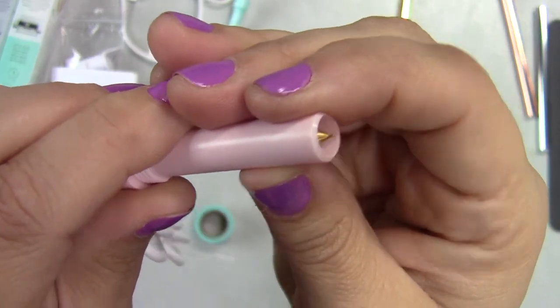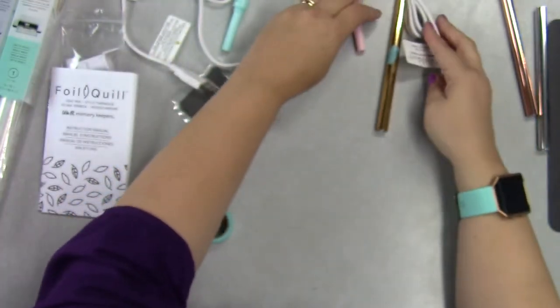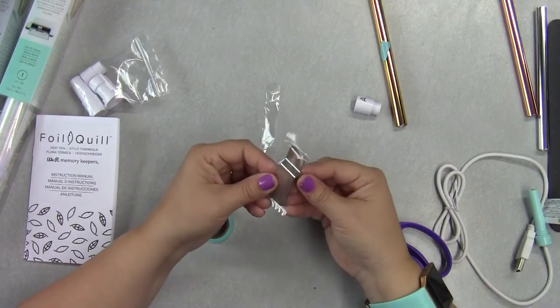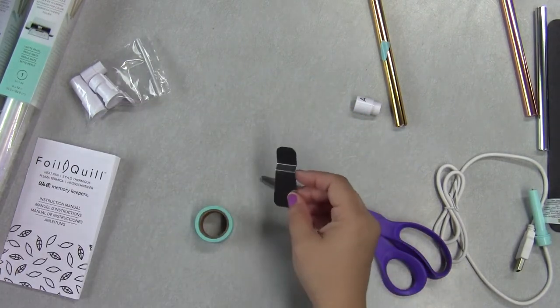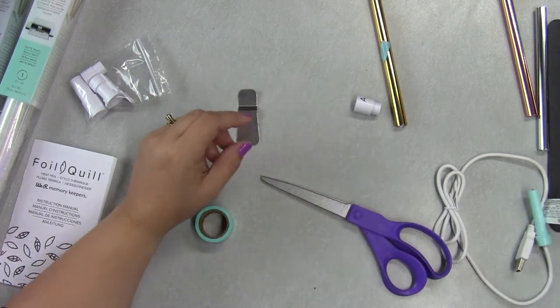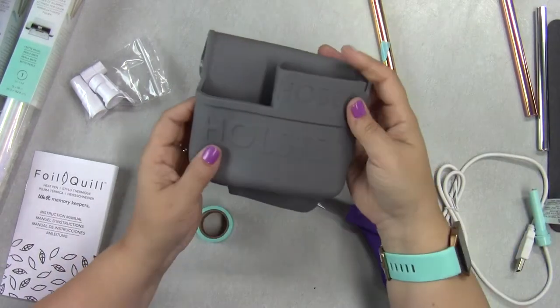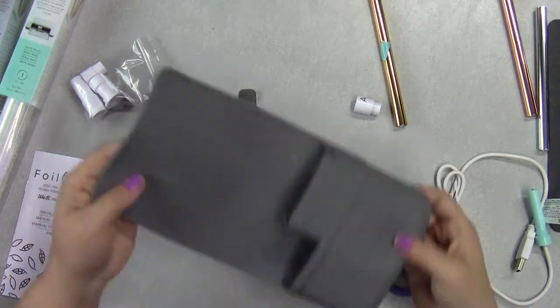In addition to the four adapters and the three tools, you get a few other things. You're going to get some foil so that you can do your first couple of projects, and you get this little metal doohickey. You're going to use this to slide it under your tool once it's in your machine, so make sure you don't throw that away.